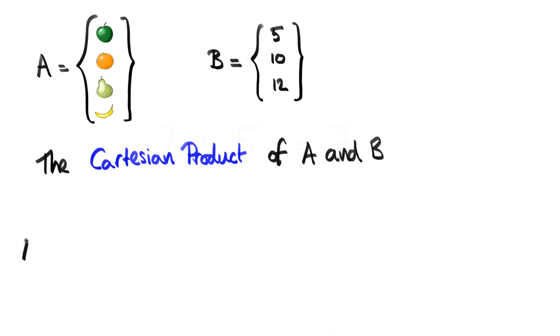And let's begin to fill out the elements that are members of A cross B. The first element is going to contain apple from A and let's say 5 from B. The second element is again going to contain apple from A, but now it's going to contain 10 from B. So it's different to the first element. The third element, we're going to have apple again, but now we're going to use the final element of B, 12. So the first three elements are all different to each other: apple and 5, apple and 10, and apple and 12.